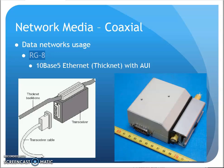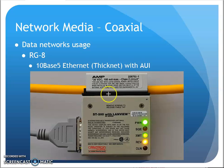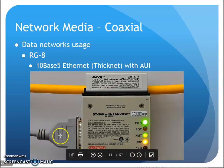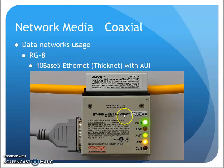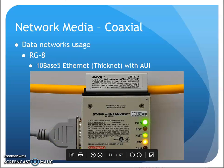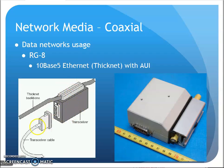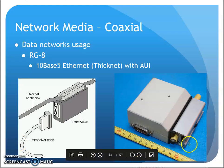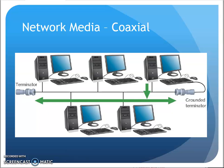This was your 10Base5 Ethernet thicknet connection. Your computer connected into the network using this transceiver. This transceiver bolted around the coax cable and then this cable connected into your PC. So my PC is tapping into that coax bus using this transceiver. Here's your coax bus, then the transceiver bolting around, and then the cable going from the transceiver unit into your PC, into your network card. That was the first Ethernet — that's how we got that first Ethernet bus.